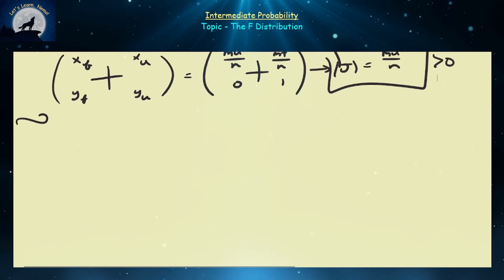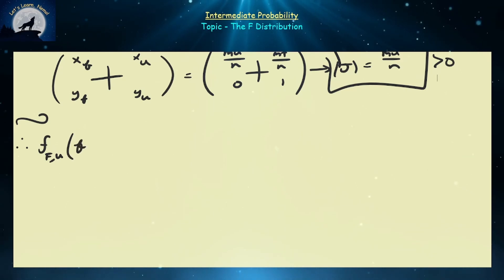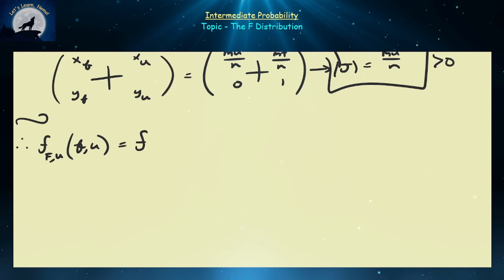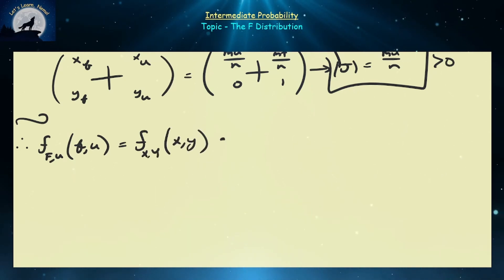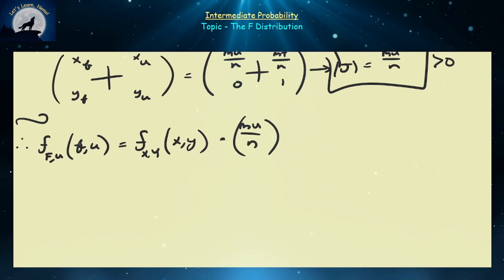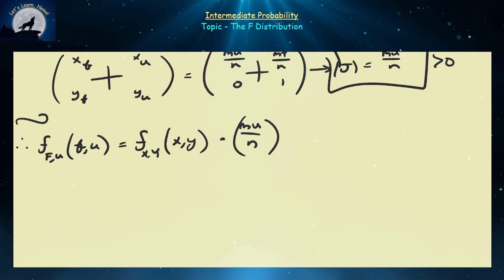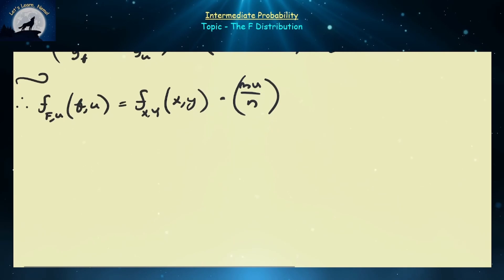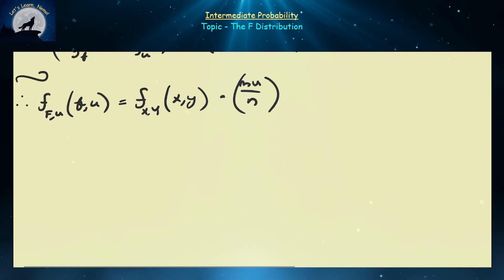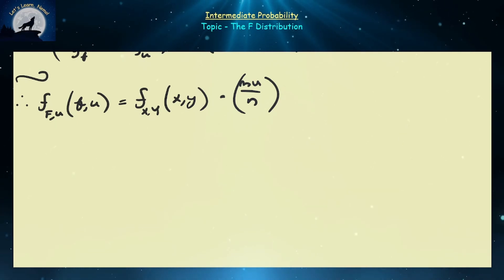Our joint probability density function between F and U equals the PDF of X and Y evaluated at little x and little y, times the Jacobian MU over N. Since X and Y are both chi-squared random variables, we repeat the chi-squared PDF twice with different variables, then switch from X, Y into U and F.